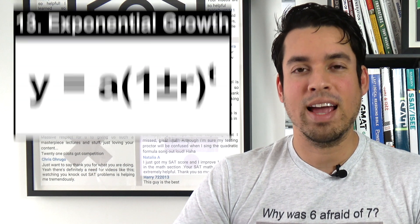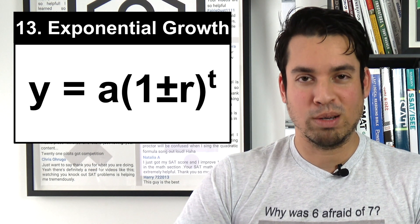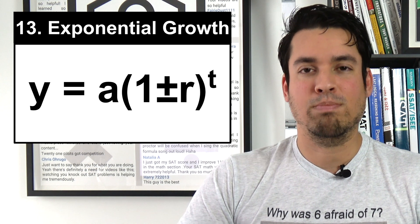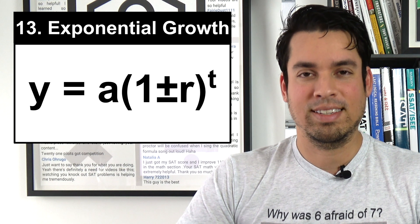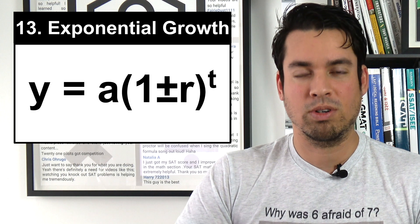Next we have the formula for exponential growth, where our a value represents our starting point, r represents the percent rate at which this quantity is growing, and of course t is time, usually number of years.